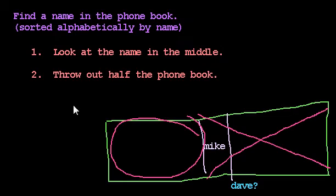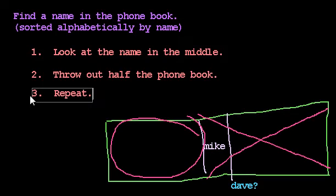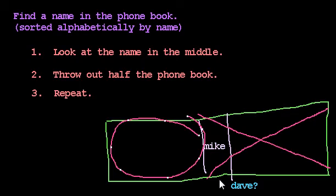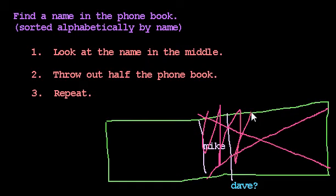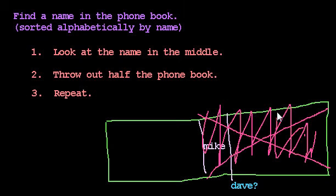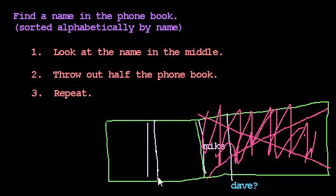We don't need that half of the phone book anymore. Then we repeat: look at the name in the middle of what remains, throw out half again. We keep bouncing back and forth, honing in on wherever that name either is — or would have been if it were in the phone book. The algorithm is: look at the name in the middle, throw out half the phone book, and repeat.